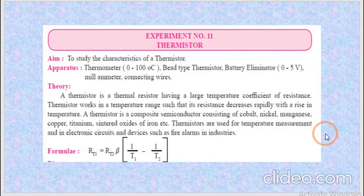For this we require thermometer, bead type thermistor, battery eliminator, multimeter and connecting wires. The formula which we are going to use for this is RT1 equals RT2 beta into 1 upon T1 minus 1 upon T2.